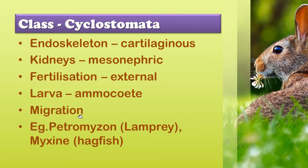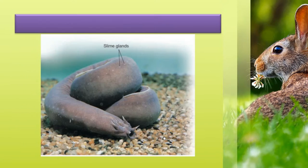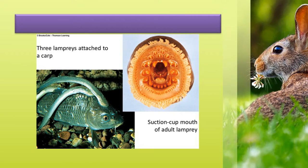They migrate from seawater to freshwater and freshwater to seawater for breeding. Movement from marine water to freshwater is called anadromous. After spawning, within a few days the larvae metamorphose and return back to the ocean. Example: Petromyzon or lamprey, and Myxine or hagfish. Here you can see the lamprey and hagfish, with the mouth which is circular and jawless.